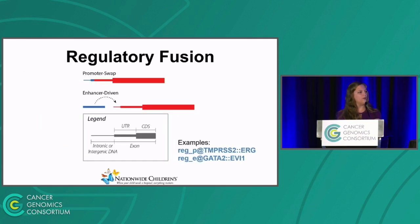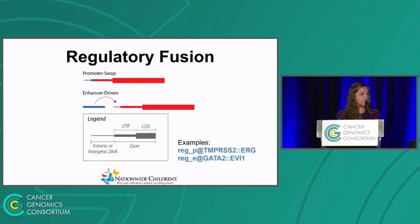And here's a visual representation of what we mean by regulatory fusion. There are two examples. On the top, we see a promoter swap, where the promoter from this arbitrary blue gene is now affecting this red gene. And in the middle, we can see an example where the enhancer for the arbitrary blue gene is affecting the red gene. In both of these examples, this results in modulated expression of the gene product of the partner gene — in this case, the red gene. On the bottom right corner, you can see some examples of regulatory fusion nomenclature as according to the specification.